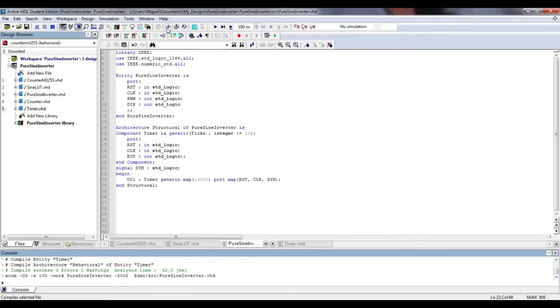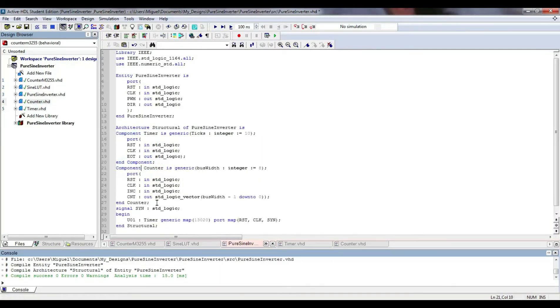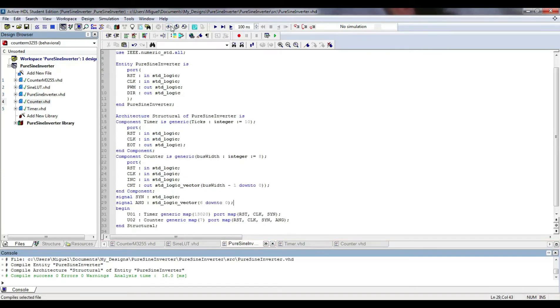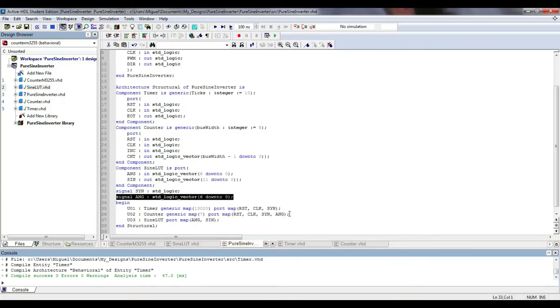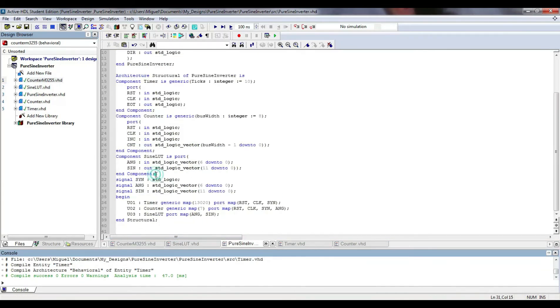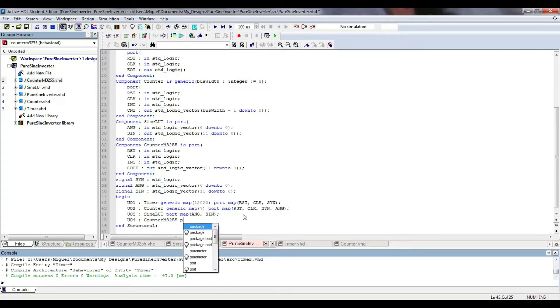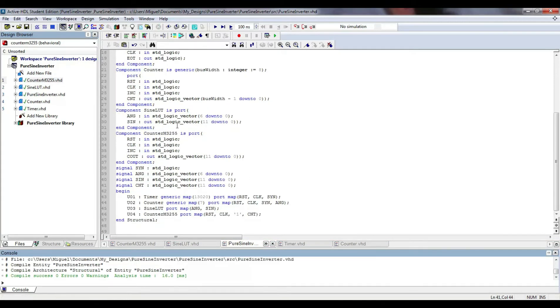Now, I describe the top-level model named PureSine Inverter. There are only two inputs, reset and clock, and two outputs, PWM and D. I follow the blocks diagram previously shown. I include the timer, generic counter, sine lookup table, and the special purpose counter. The comparison is described with a conditional statement.